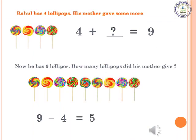Here you can see an example. Rahul has 4 lollipops. His mother gave some more. Now he has 9 lollipops. How many lollipops did his mother give? We don't know how many lollipops his mother gave. First we can write this by using addition: 4 plus dash equals 9.